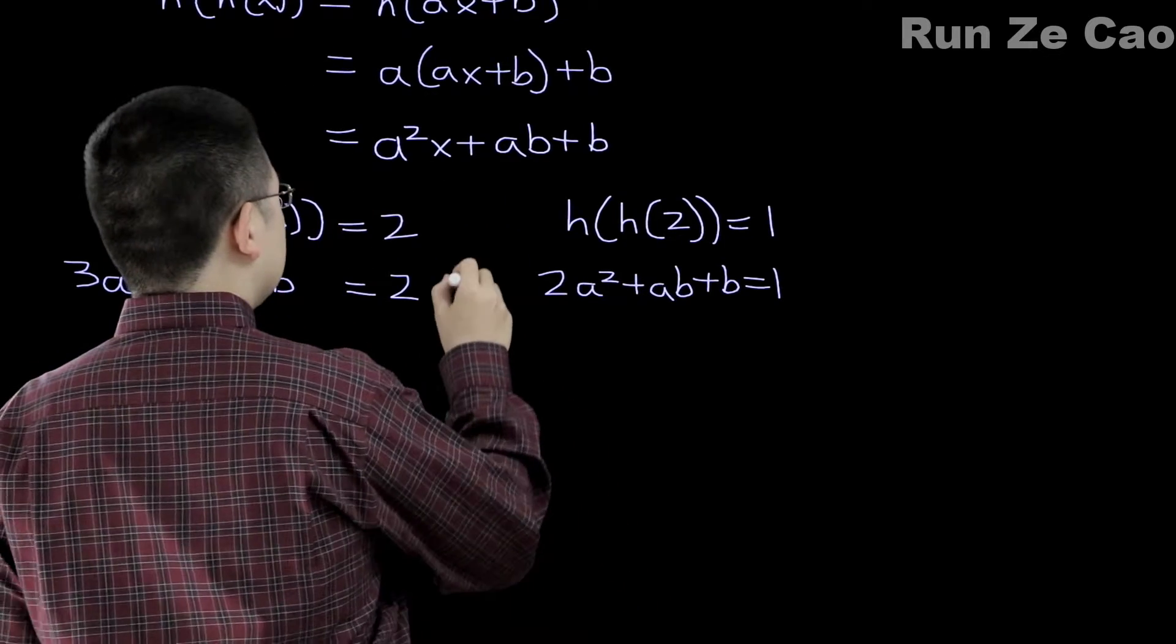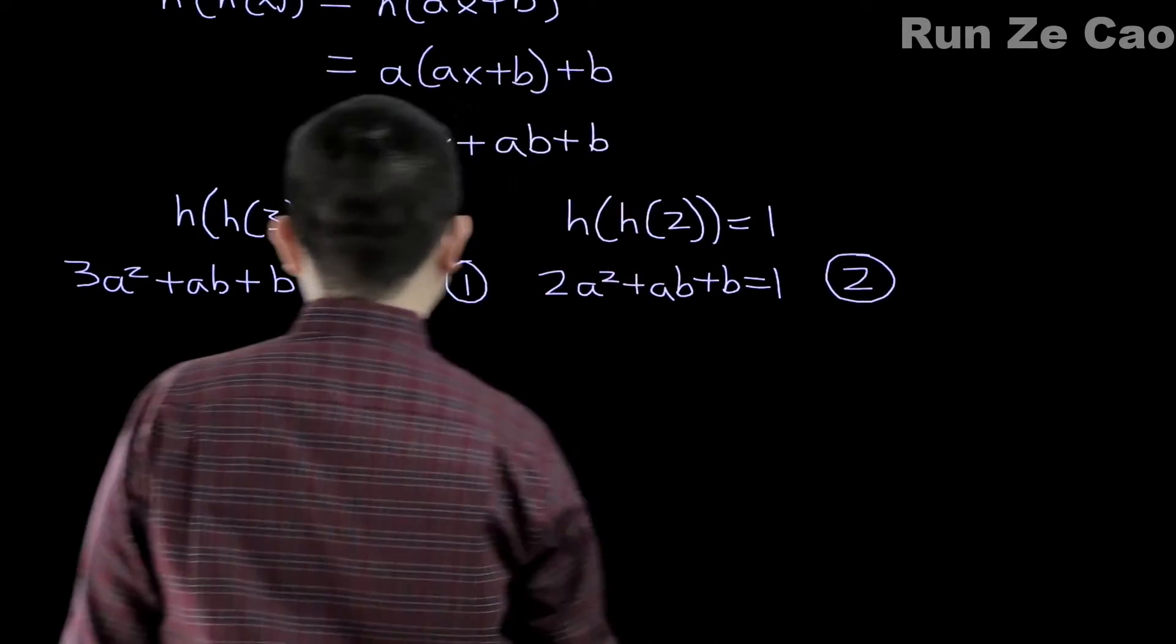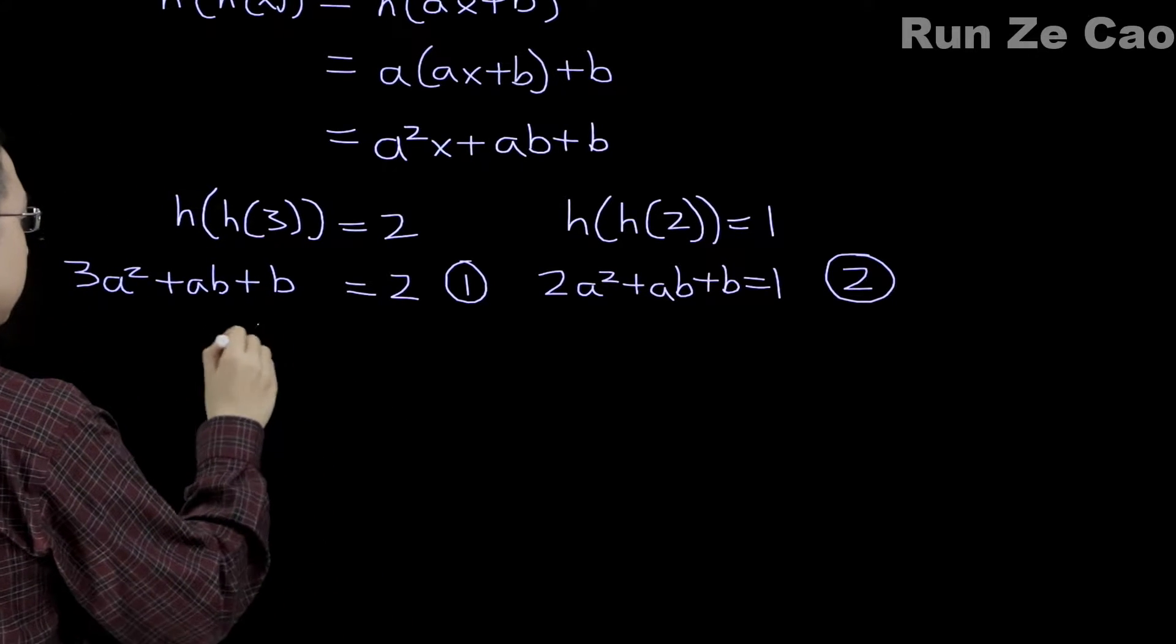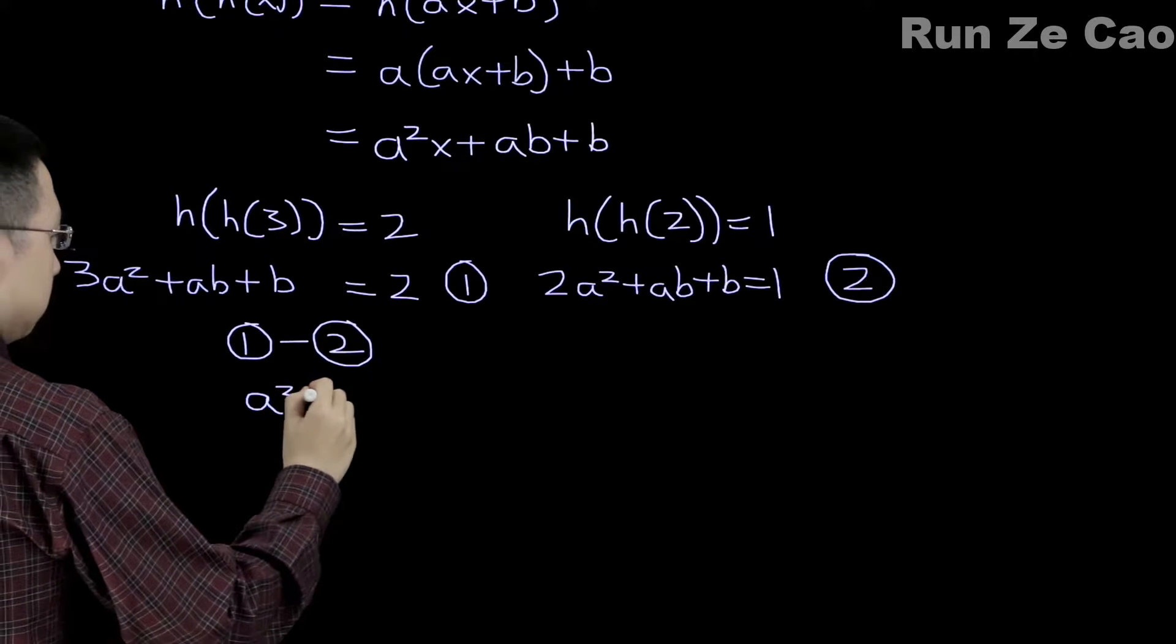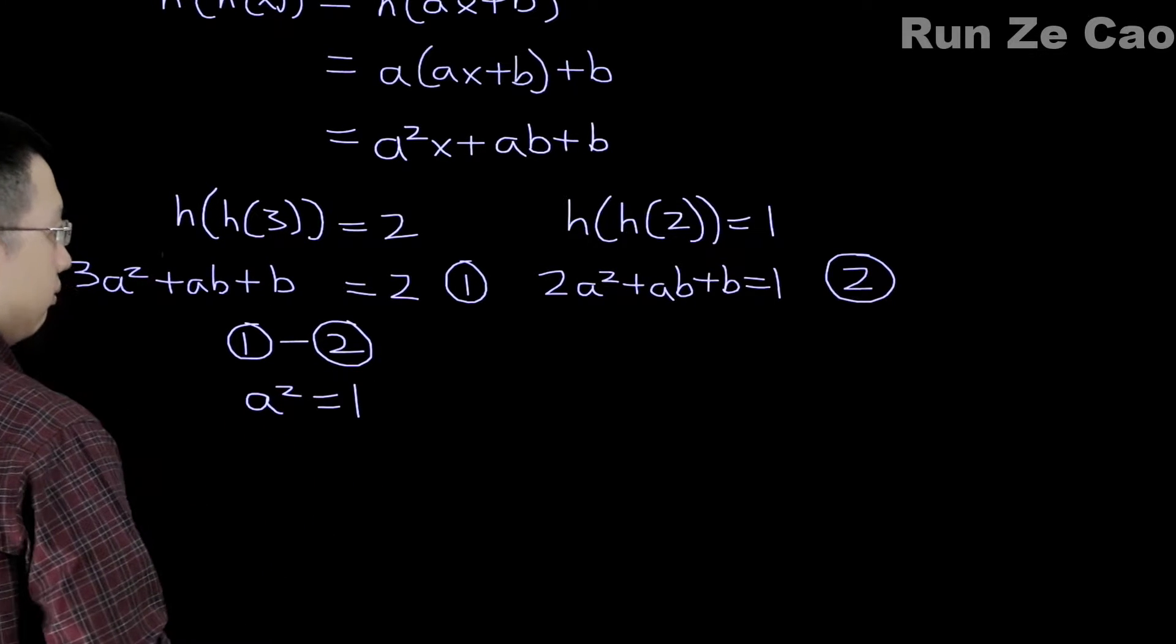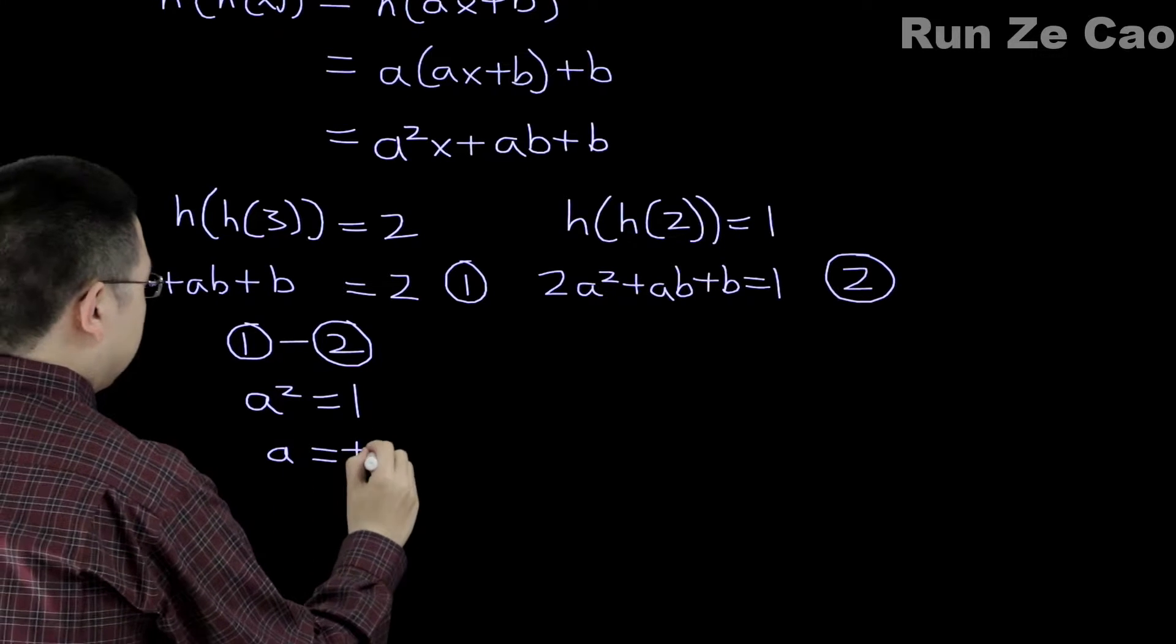What does this give us? So suppose this item here is number 1 and this is number 2. What do we get when we subtract them? Minus 2. This gives us A² equals 1. A equals plus or minus 1.